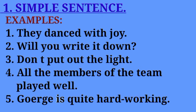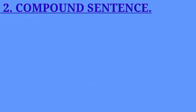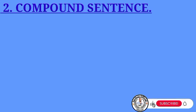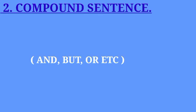Now, compound sentences. What is the difference between a compound sentence and a simple sentence? A compound sentence is formed when two or more simple sentences are joined together by a connecting word — like 'and' or 'but.' These connecting words are called conjunctions.